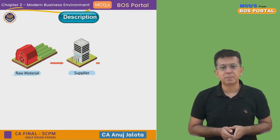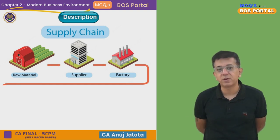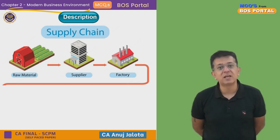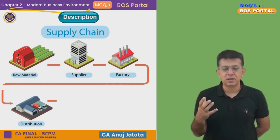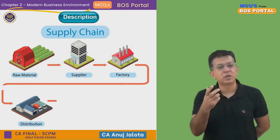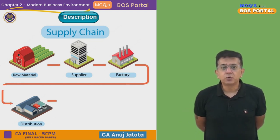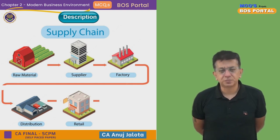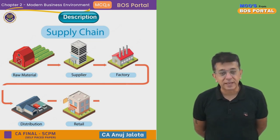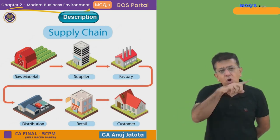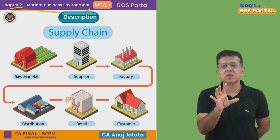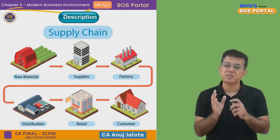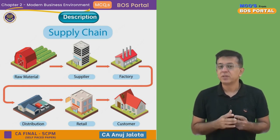Raw material is supplied by the supplier to us — we are in the factory. Once material comes to us, we convert it into finished goods. Once that is done, we need to distribute it across the country or across our markets through wholesalers and distributors. Through the distributors, the finished goods reach the retailers and finally the consumer. All this process in the middle is called supply chain management.